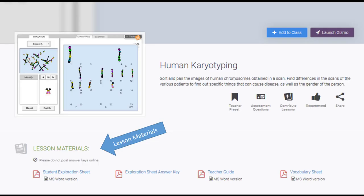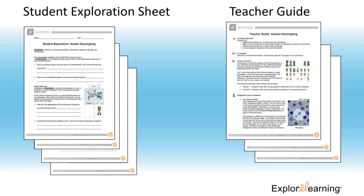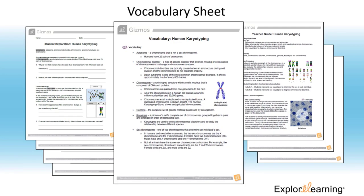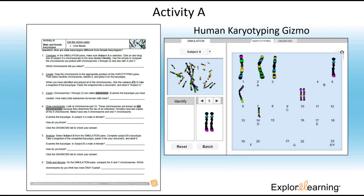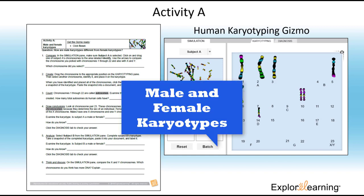Every gizmo has a set of lesson materials. This gizmo has some excellent real-life connections in its lesson materials. I like to use activity A as a self-guided inquiry lesson with an ELA component. Students come to the conclusion through this activity that male and female karyotypes are different.